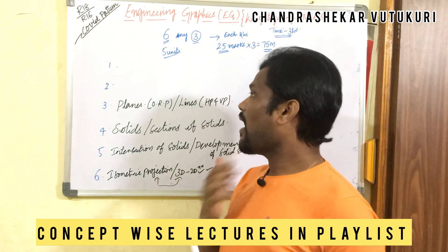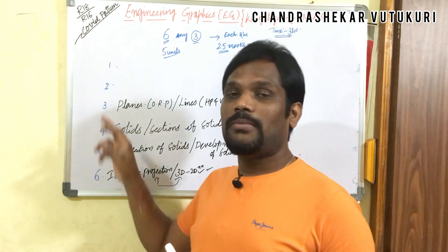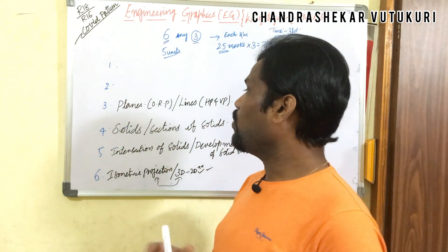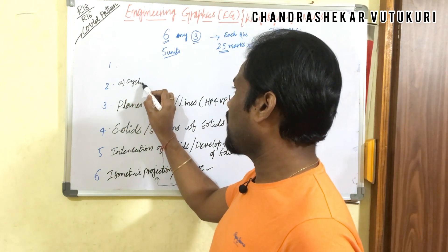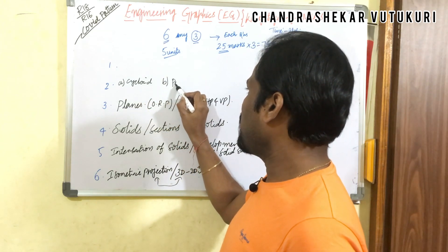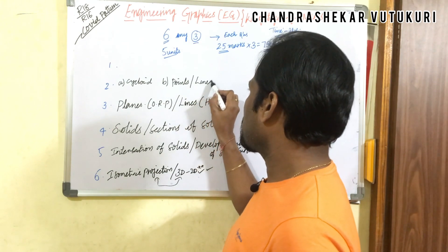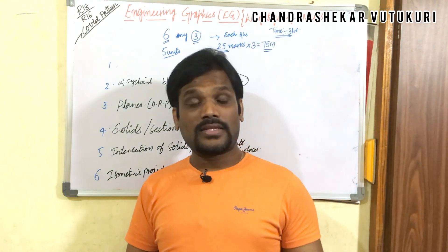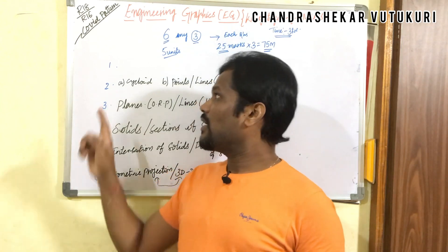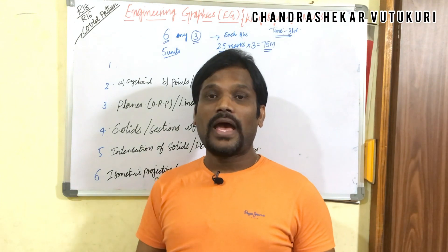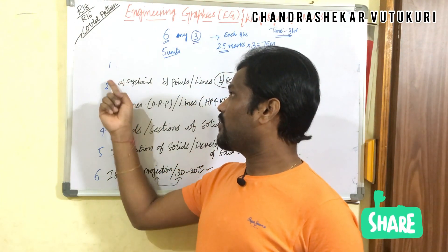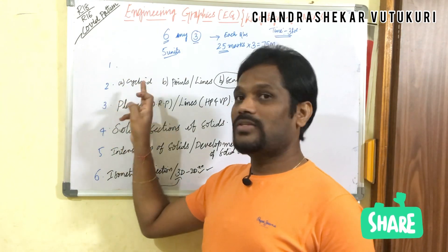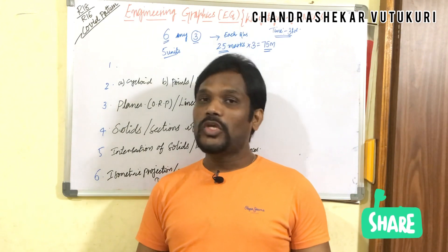For questions one and two, some papers have both from Unit 1, while others split them: question 2A from Unit 1 and 2B from Unit 2. Question 2A may be a cycloidal curve and 2B could be orthographic projection of points, lines, or a scale. As per last year's CSC paper analysis, 30–50 marks came directly from Unit 1. EC and Mechanical branches had one and a half questions from Unit 1 and one and a half from Unit 2.